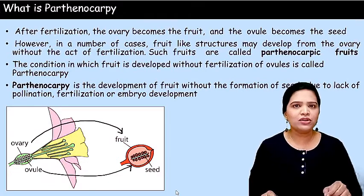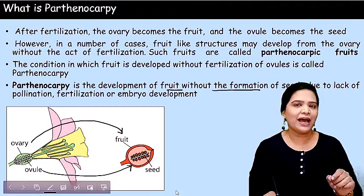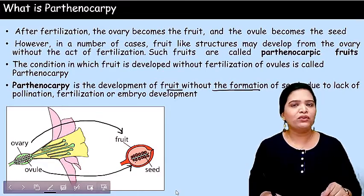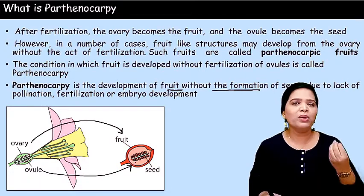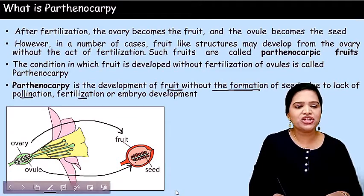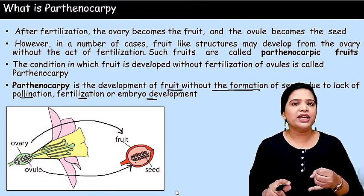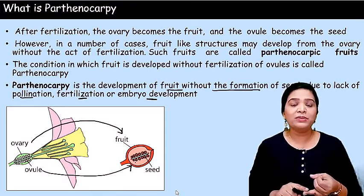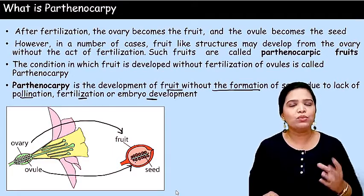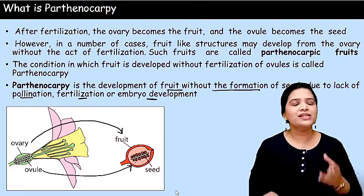Whereas in parthenocarpy, the development of the fruit occurs without the formation of the seed. Fruit develops without the development of the seed. Why is there no seed? Because there is a lack of pollination, or fertilization, or embryo development — one or more of these reasons. There won't be any pollination, or fertilization, or even if fertilization occurs the embryo development will not be completed. As a result, only the fruit will be there without any seeds. This condition is called parthenocarpy.